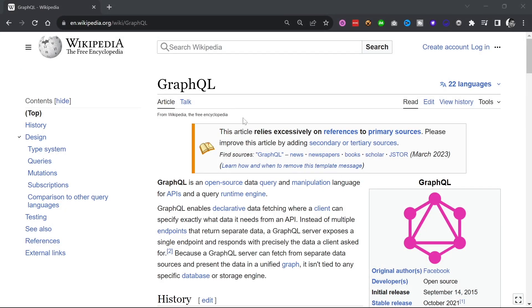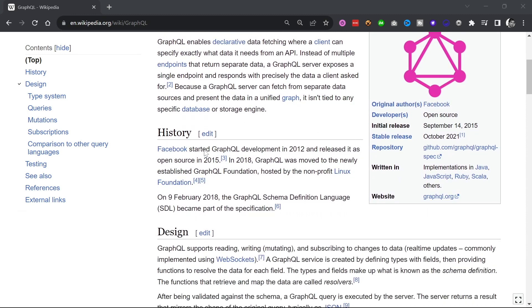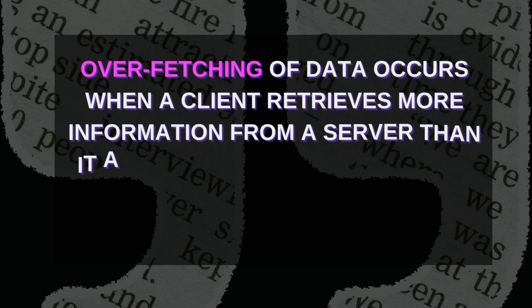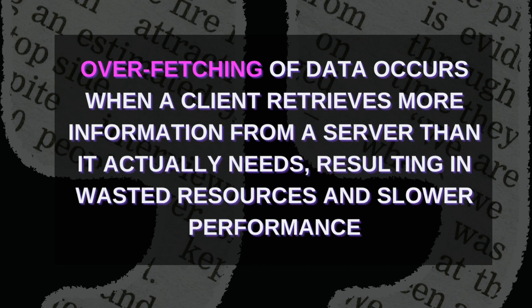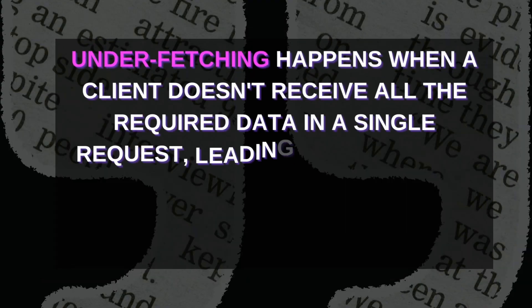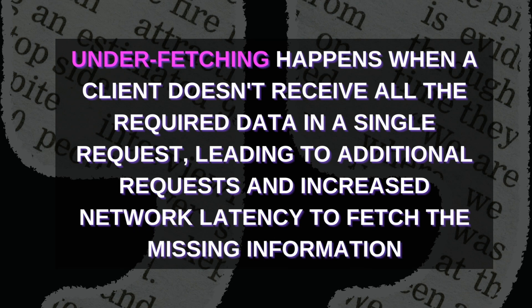GraphQL was developed originally by Facebook in 2012 and publicly released in 2015. As Facebook's mobile applications grew, they faced challenges with traditional REST API, which resulted in over-fetching or under-fetching of data. Over-fetching occurs when a client retrieves more information from a server than it actually needs, resulting in wasted resources and slow performance. Under-fetching happens when a client doesn't receive all the data required in a single request, leading to additional requests and increased network latency.